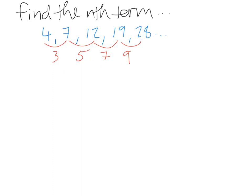So now we find the second difference. To get from 3 to 5, a difference of 2. From 5 to 7, a difference of 2. From 7 to 9, a difference of 2. Since the second difference is the same, this is definitely a quadratic sequence. And since there is a second common difference of 2 each time, we know that n squared is contained in our sequence.